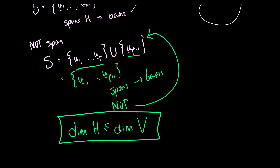If H is equal to V, then clearly the dimension of H is going to equal the dimension of V. But H can never be greater than V, so the dimension of H is never going to be greater than the dimension of V. That is the theorem.